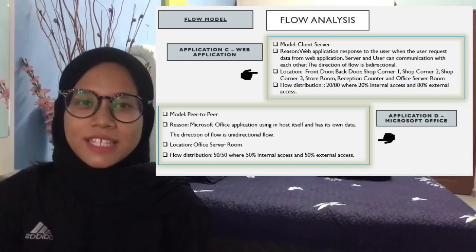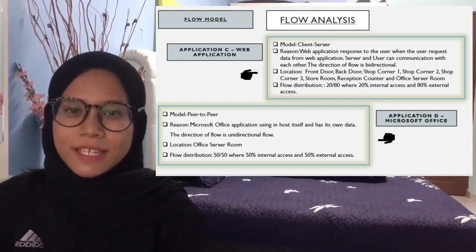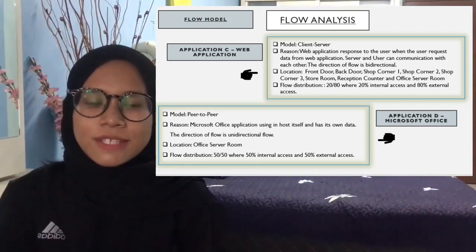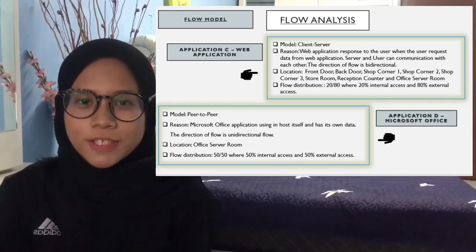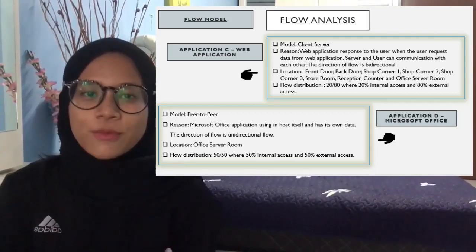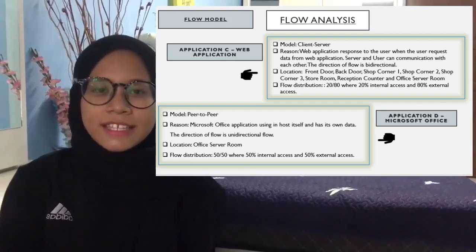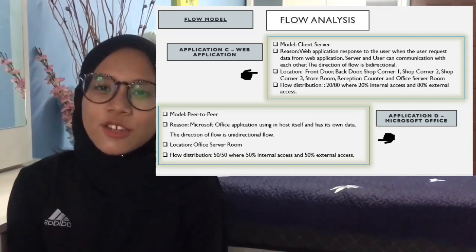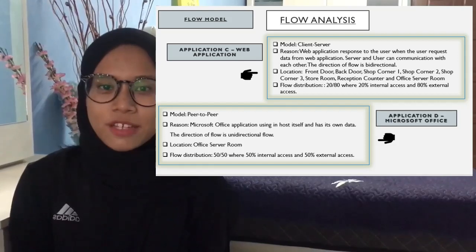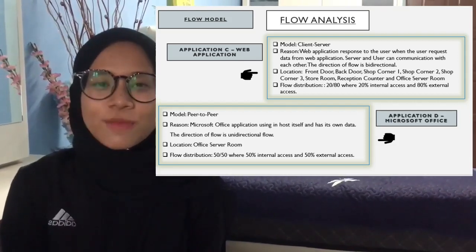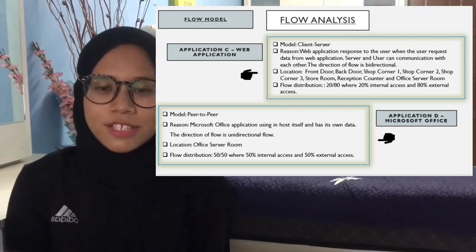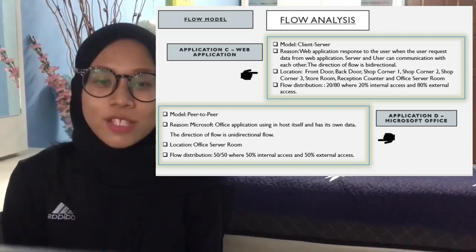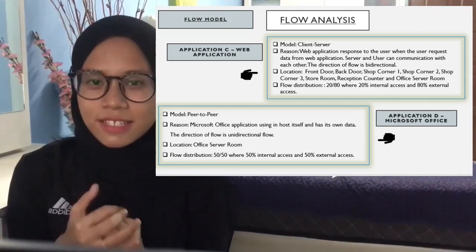The third application for flow analysis is application C, which is a web application. Its model is client-server because the web application responds to users when they request data. Client and server communicate bi-directionally. The locations are front door, back door, shop corners 1, 2, and 3, reception counter, and office server room. The flow distribution is 20/80 — 20% internal and 80% external access.